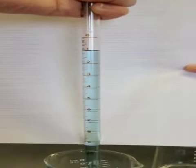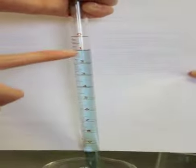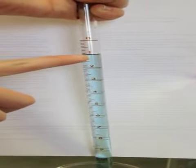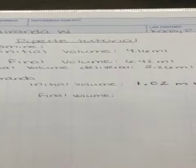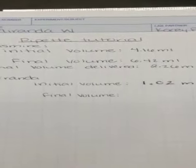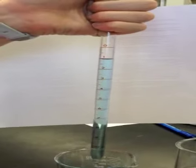The initial volume is 1.02 read from the bottom of the meniscus. The initial volume is 1.02 milliliters. Now I'm going to release some of the liquid.